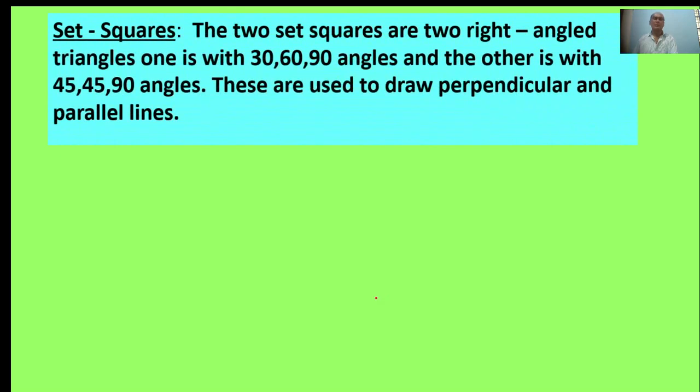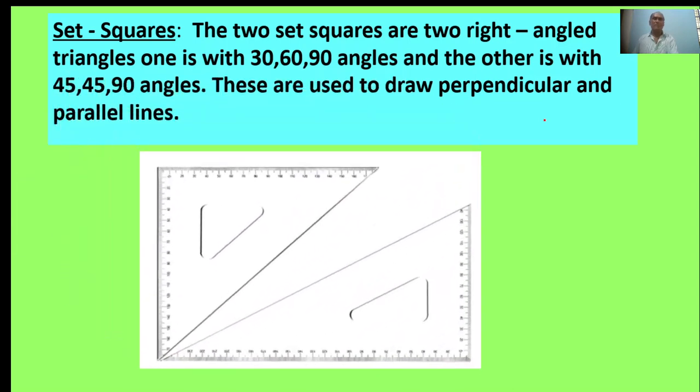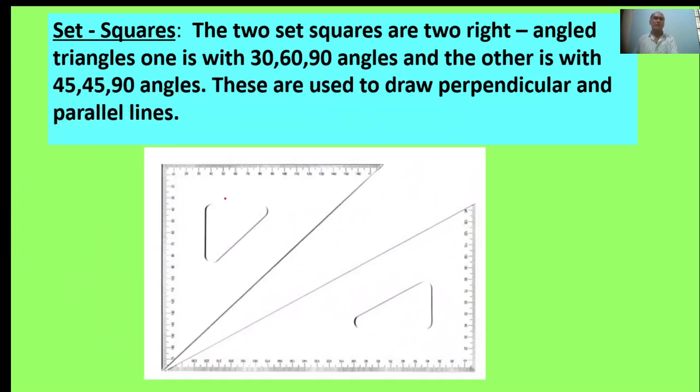Set squares. The two set squares are two right angle triangles. One is with 30, 60, 90 degrees and the other is with 45, 45, 90 angles. These are used to draw perpendicular and parallel lines. Two set squares are given, most importantly used for perpendicular and parallel lines.